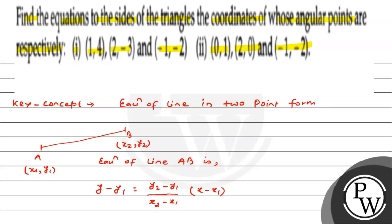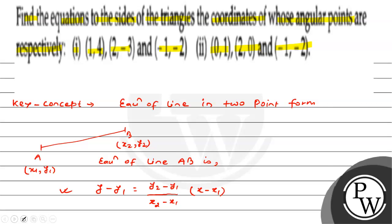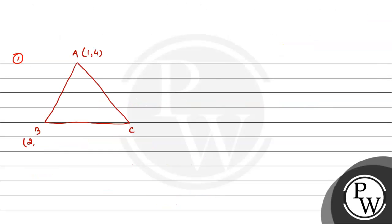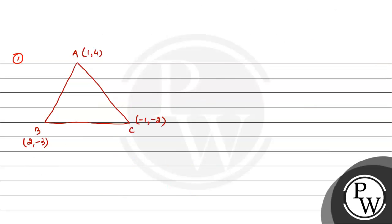Using this concept, we will solve the question. We have a triangle ABC whose vertices are given. Supposed triangle A, B and C with coordinates A(1, 4), B(2, -3), and C(-1, -2). First, let us find the equation of side AB.